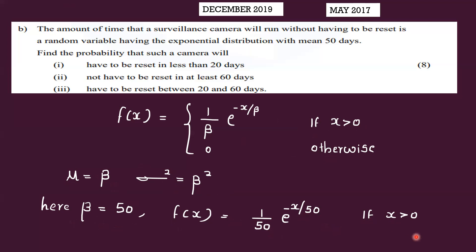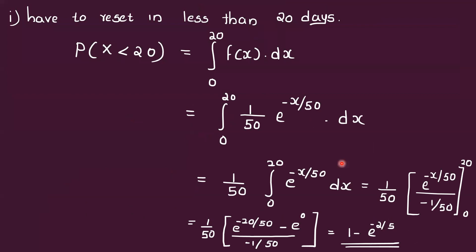For the first part, the probability that the camera has to be reset in less than 20 days: P(X < 20) = integral from 0 to 20 of f(x) dx. Substituting f(x) = (1/50) * e^(-x/50), this becomes (1/50) times the integral from 0 to 20 of e^(-x/50) dx.